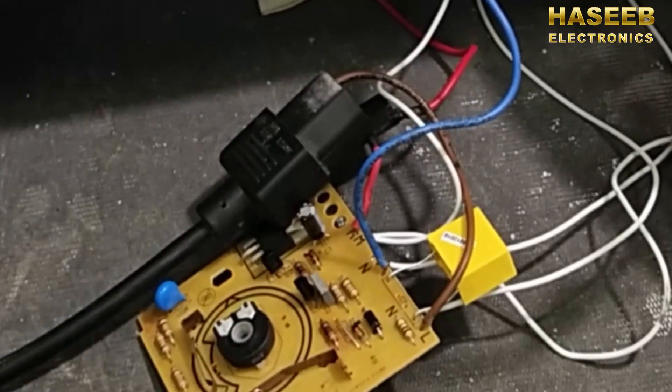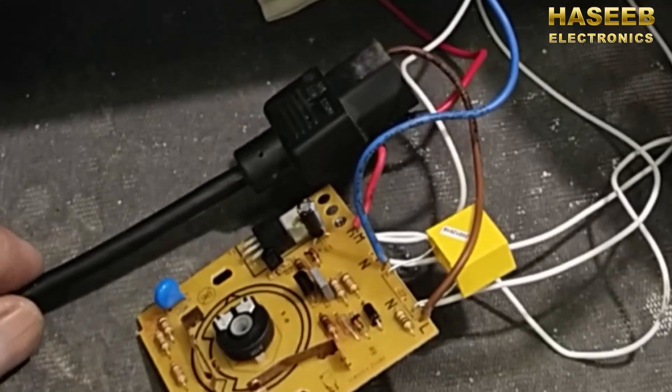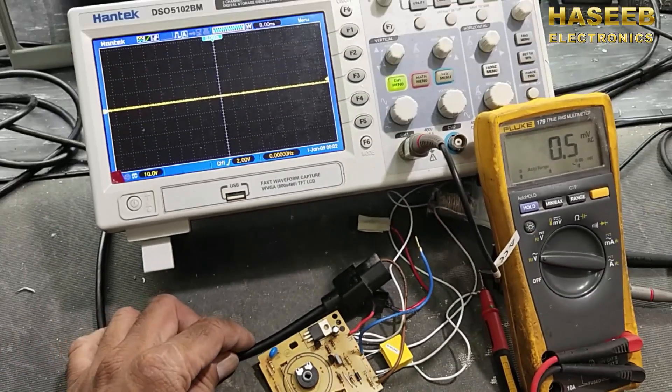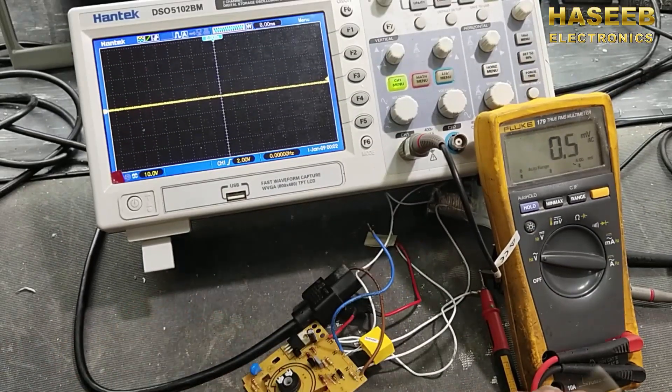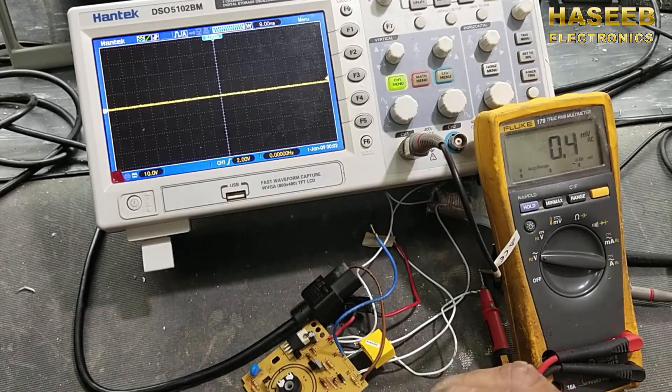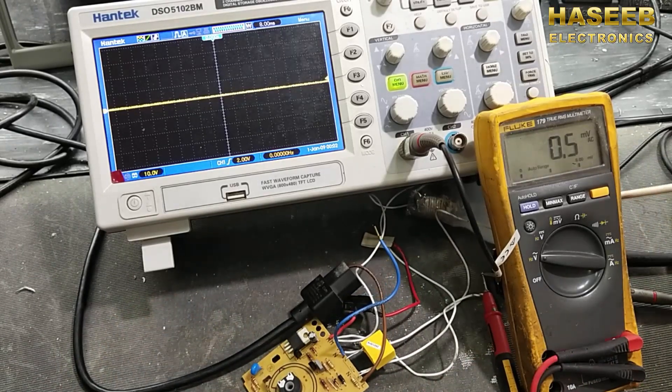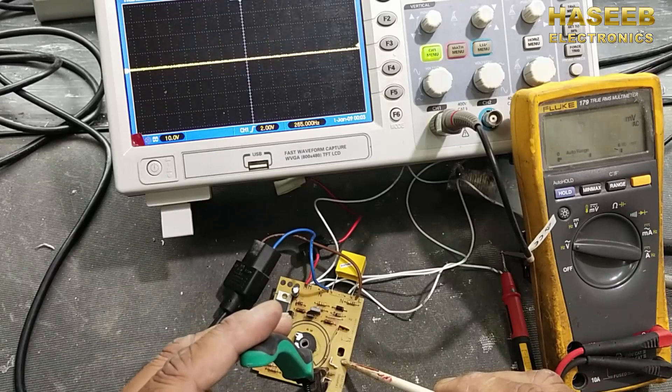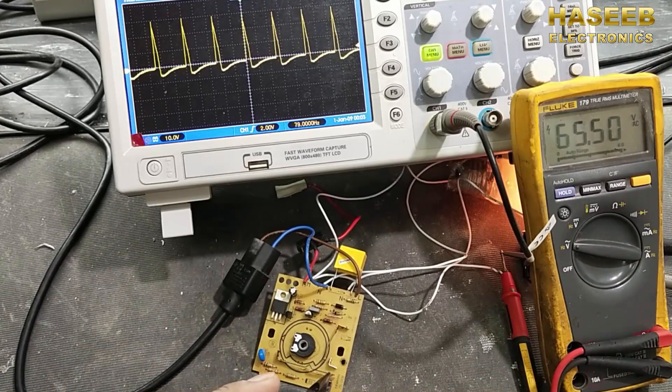Friends, today I will discuss this voltage control circuit for AC motors. It is basically a circuit for cutter, juicer and mixer. How it works? I connected a load to demonstrate. When this switch is on from here...